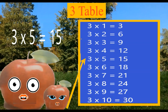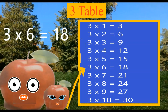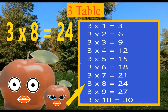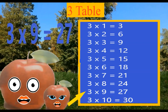Three fives are fifteen. Three sixes are eighteen. Three sevens are twenty-one. Three eights are twenty-four. Three nines are twenty-seven.